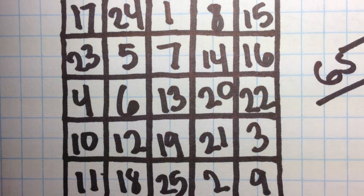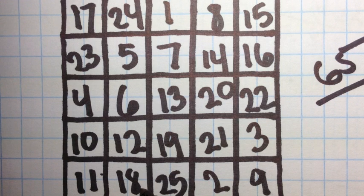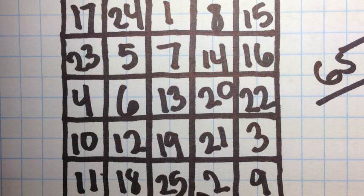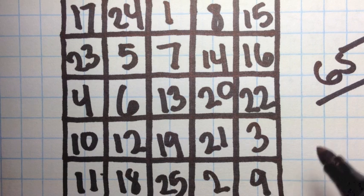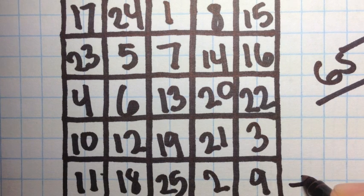Now let's check it with the rest of the rows. 11 plus 18 equals 29, plus 25 equals 44, plus 2 equals 46, plus 9 equals 65.